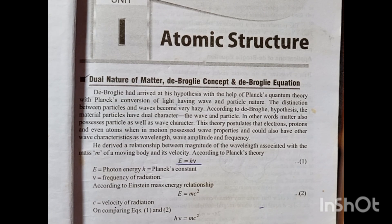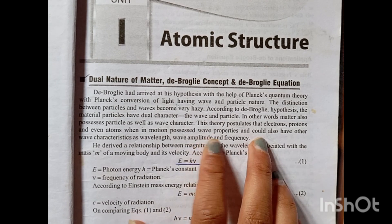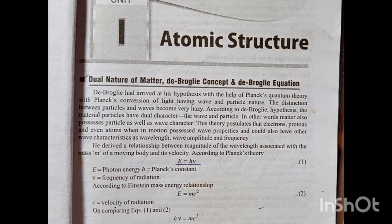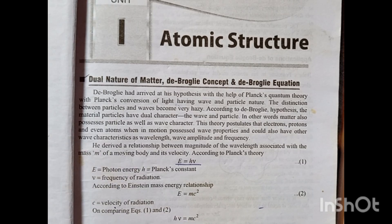This theory postulates that electrons, protons, and even atoms, when in motion, possess wave properties and could have other wave characteristics such as wavelength, wave amplitude, and frequency. De Broglie's hypothesis is straightforward: with the help of Planck's wave-particle duality, material particles have dual nature — particle nature and wave character.